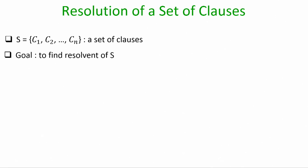We have seen how to resolve a pair of clauses. Next, we want to see how to resolve a set of clauses where we may have more than two clauses. Imagine you are given a set of n clauses S. The idea is that we keep on finding two clauses from this collection and resolving them, stopping when we cannot proceed further.